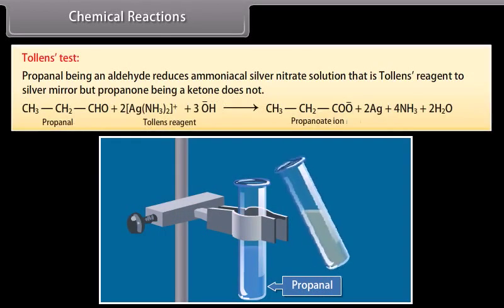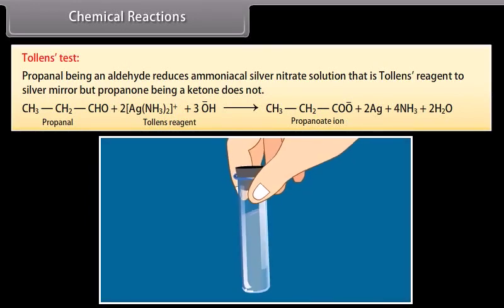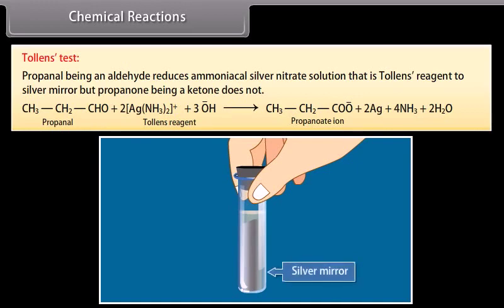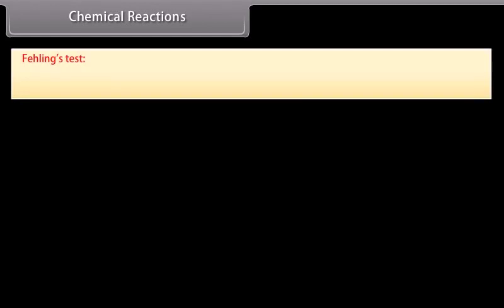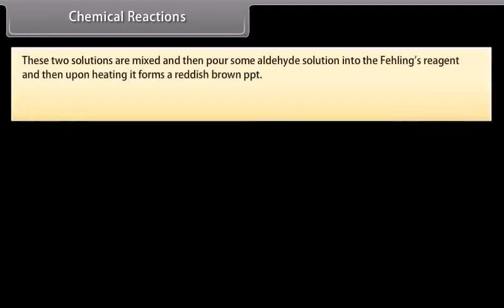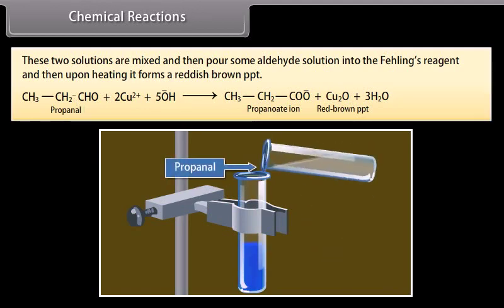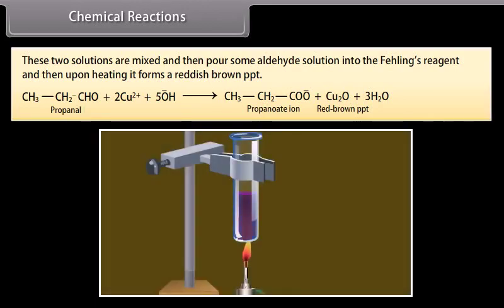Tollens test: propanal, being an aldehyde, reduces ammoniacal silver nitrate solution (Tollens reagent) to a silver mirror, but propanone, being a ketone, does not. Fehling's test: Fehling's solution is a mixture of aqueous copper sulfate (Fehling A) and an alkaline solution of Rochelle's salt, that is sodium potassium tartrate (Fehling B). These two solutions are mixed, then some aldehyde solution is added, and upon heating it forms a reddish-brown precipitate.